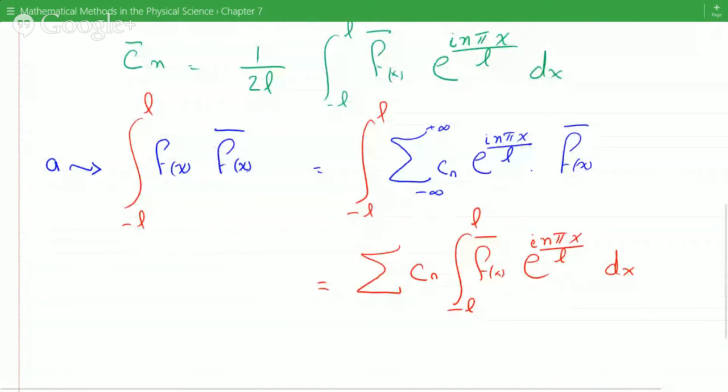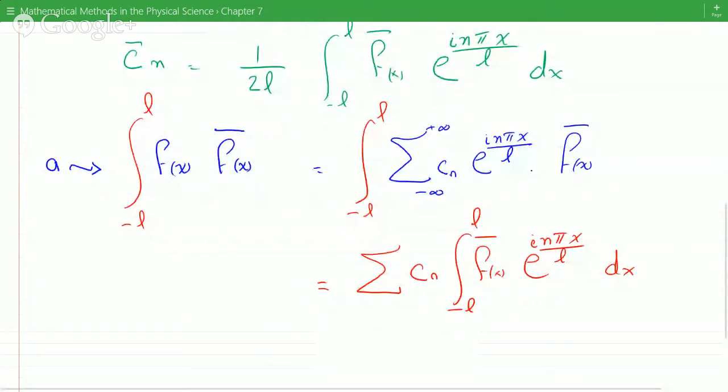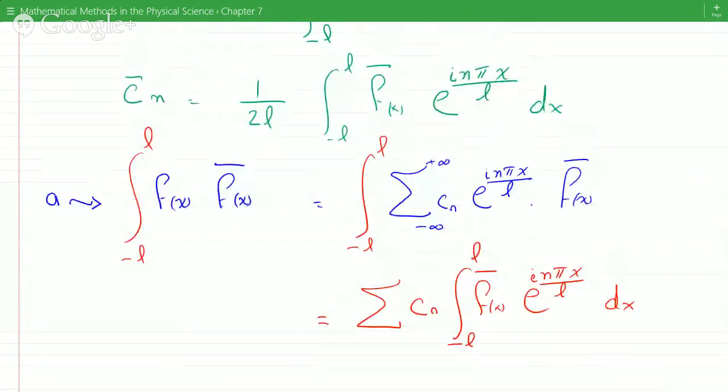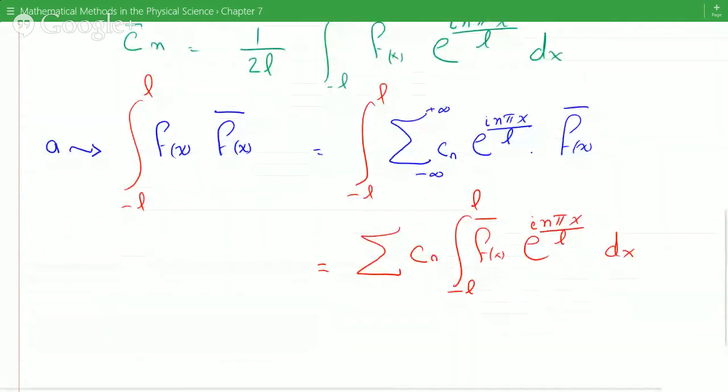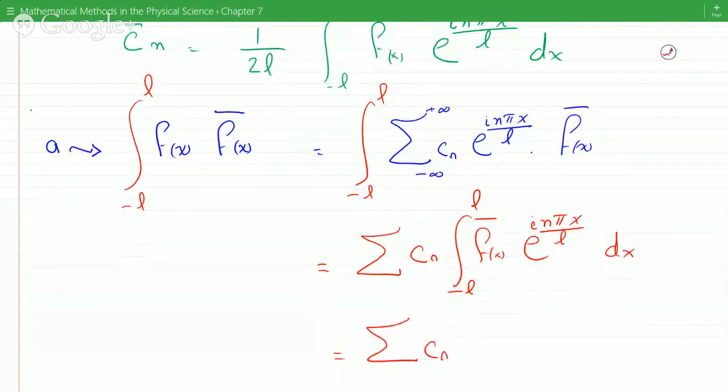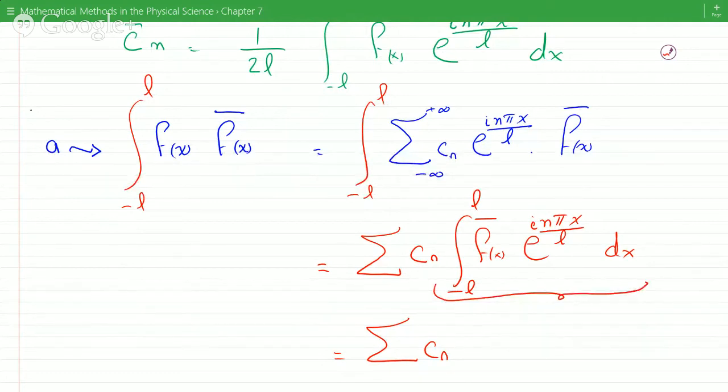Okay, now we know that this guy here. Okay, so now this is gonna become C_n, but this guy here is nothing but 2L times C_n.